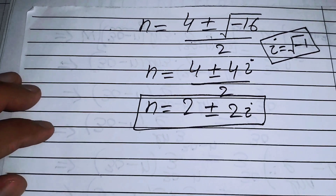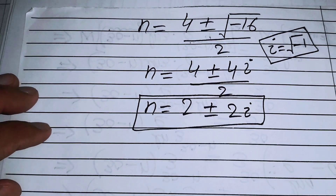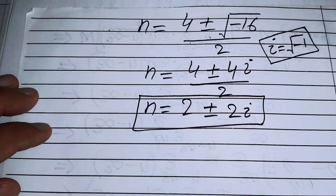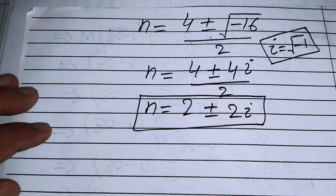These complex roots n equals 2 ± 2i, along with the real root n equals 2, are our final answers. Thank you so much for watching this video — please subscribe to my channel for more exciting videos.